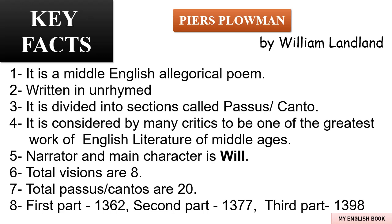The first key fact is that Piers Plowman is a Middle English allegory narrative poem. In this poem you will find lots of allegory characters. Allegory characters are those characters who represent human qualities. The second point is that this poem is written in unrhymed verse, meaning there is no rhyming scheme in this creation.